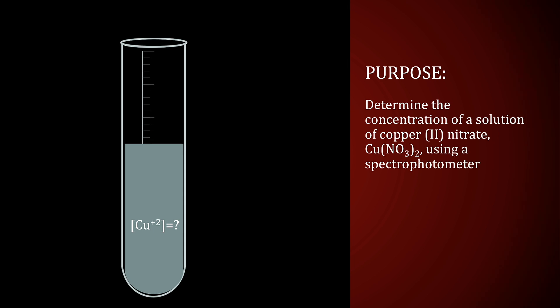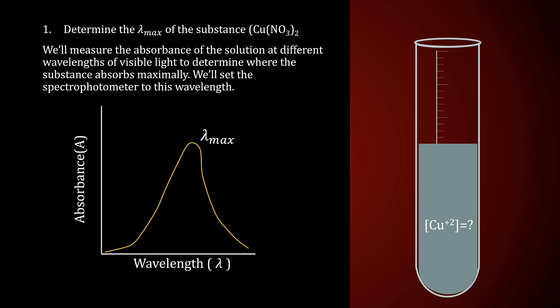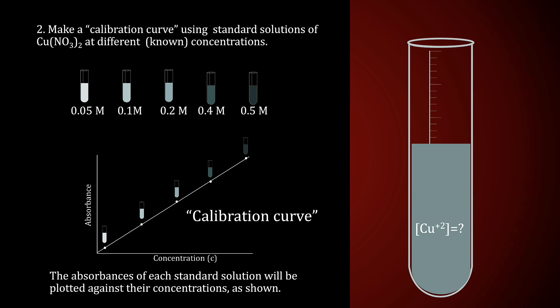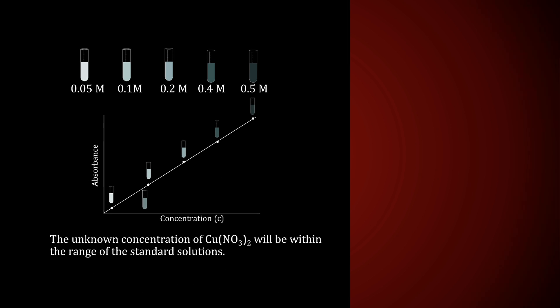The purpose of the lab is to determine the concentration of a copper(2+) nitrate solution using Beer's law and a spectrophotometer. The first thing we'll do is determine the lambda max of the solution in order to know where in the visible range of the EM spectrum the sample absorbs, and we will set the spectrophotometer to this wavelength. We will then generate a calibration curve by measuring the absorbances of standard solutions of copper(2+) nitrate of different concentrations. The plot must result in a straight line in order to use Beer's law. The unknown solution will have a concentration somewhere in the range of the calibration plot, so we could qualitatively estimate its concentration by visual inspection.